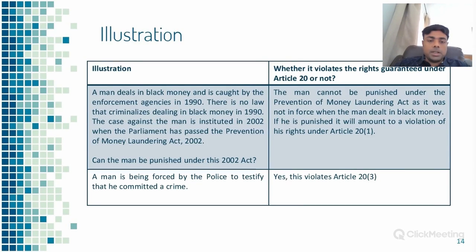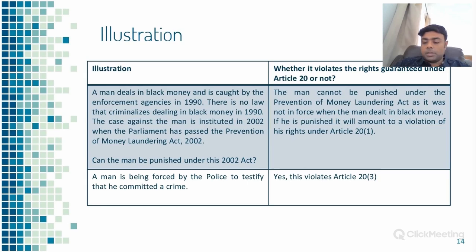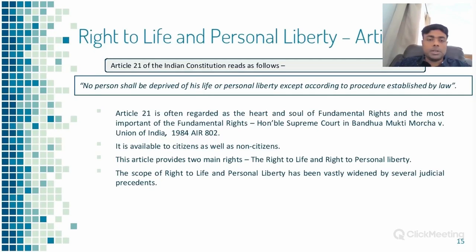For example, if a man deals with black money and the money laundering legislation was brought in 2002, but the crime was committed prior to 2002, he cannot be convicted under that act. And if a man is forced by police to testify that he has committed a crime, that is squarely in violation of Article 20.